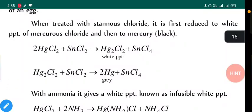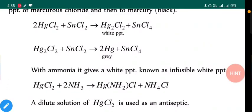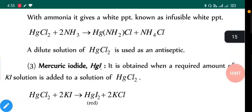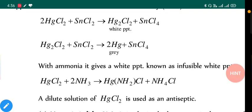As the reaction suggests: 2HgCl₂ + SnCl₂ → Hg₂Cl₂ + SnCl₄, then Hg₂Cl₂ with heat gives HgCl₂ + Hg. With ammonia it gives white precipitates - infusible white ppt. HgCl₂ with NH₃ gives Hg(NH₂)Cl and NH₄Cl. A dilute solution of HgCl₂ is used as antiseptic.